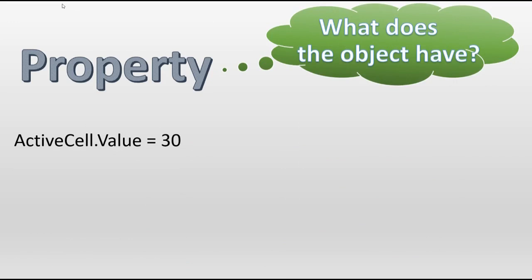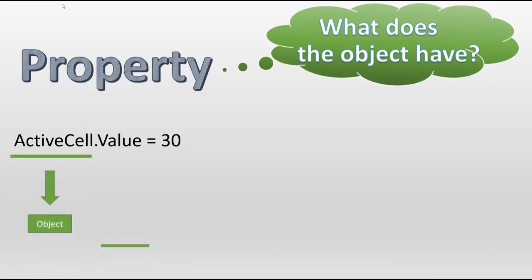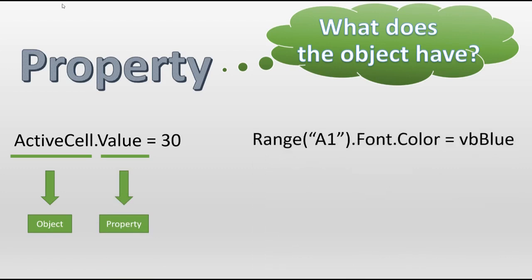Let's take some samples. ActiveCell.Value is set to a value. ActiveCell here is an object, and value replies to the question: what does the object have? So it is a property. The next sample is Range.Font.Color = Blue.